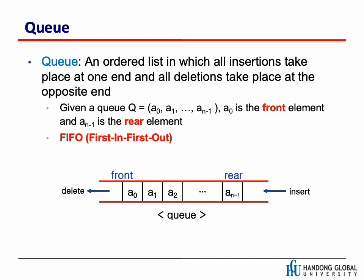Basically, a queue is FIFO — First In First Out — it's like a coffee house. As you can see in this figure, insertion occurs on the right side and deletions occur on the other side. We call it front and rear. A queue is really similar to a stack in a sense, but it has two sides.